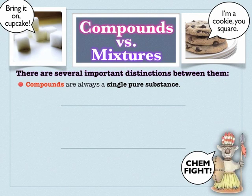One of the big mistakes I see with students is to look at sugar, see that it contains three elements, and say 'oh, that's a mixture.' It's not a mixture because they're not physically combined — they're chemically combined into one substance with specific chemical and physical properties. Mixtures are never composed of a single substance.